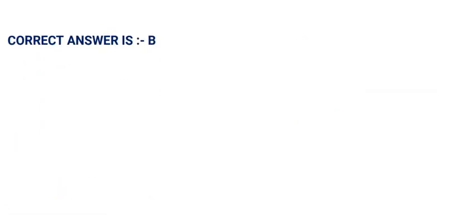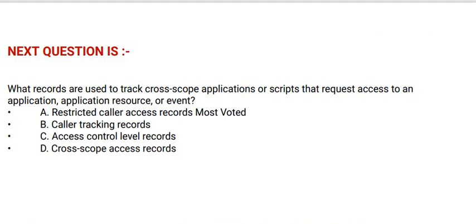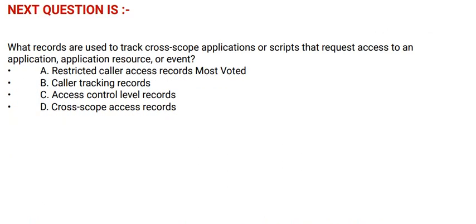Next question: What records are used to track cross-scope applications or scripts that request access to an application, application resource, or event? Option A: restricted caller access records. Option B: caller tracking records. Option C: access control level records. Option D: cross-scope access records. The correct answer is Option A.